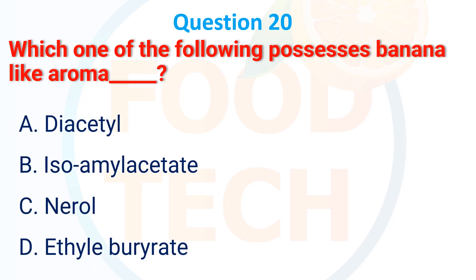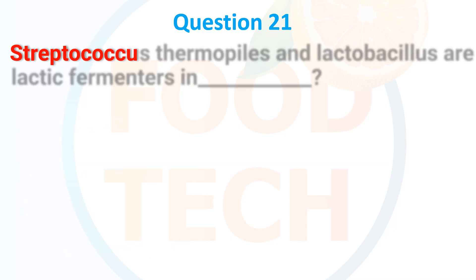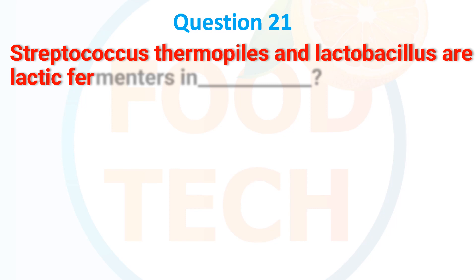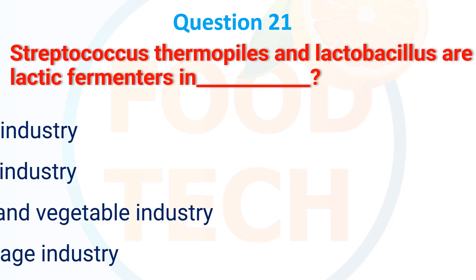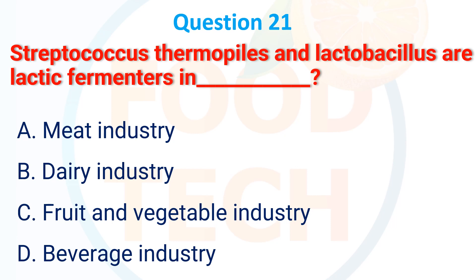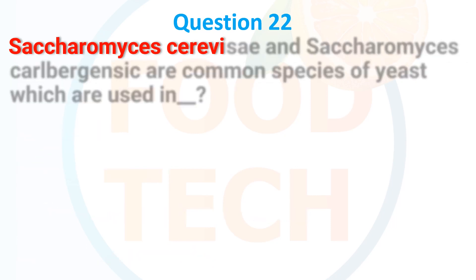Which one of the following possesses a banana-like aroma? A. Diacetyl, B. Isoamyl acetate, C. Nerolidol, D. Ethyl butyrate. The correct answer is isoamyl acetate. Lactobacillus thermophilus and Lactobacillus are involved in lactic fermentation in the dairy industry. The correct answer is dairy industry.